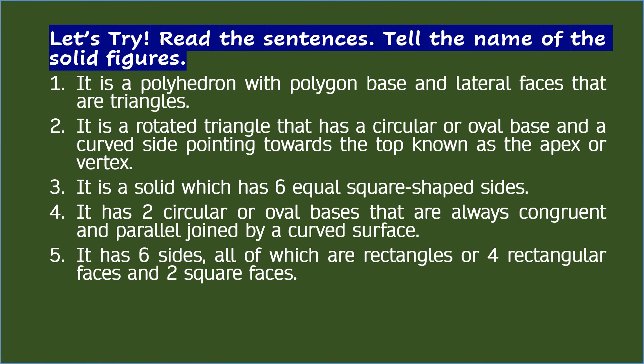Let's try. Read the sentences and tell the name of the solid figures. 1. It is a polyhedron with a polygon base and lateral faces that are triangles. The answer is pyramid. 2. It is a rotated triangle that has a circular or oval base and a curved side pointing towards the top known as the apex or vertex. The answer is cone. 3. It is a solid which has six equal square-shaped sides. The answer is cube.